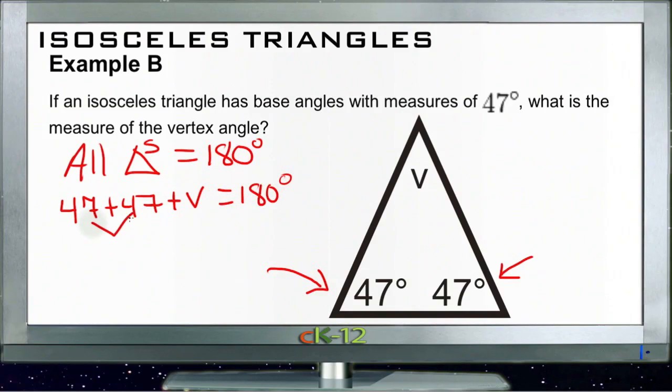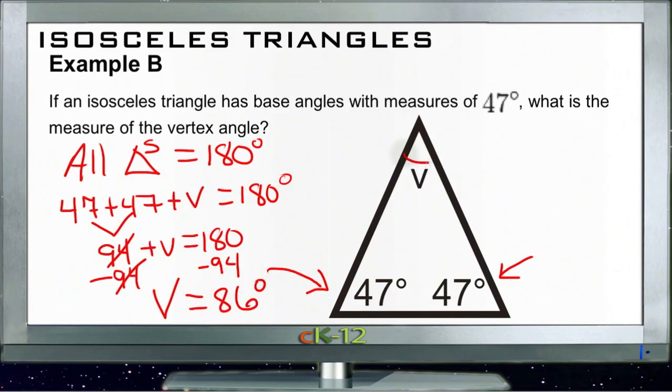So if we add these two together, we get 47 and 47 is 94. 94 plus V is 180. Subtract 94 from both sides and the 94s go away. We get V equals 86 degrees. So that tells us that the vertex angle up here is 86 degrees.